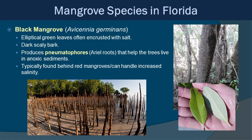Next up, we have the black mangrove. The black mangrove has more elliptical leaves that are often encrusted in salt. They have bark that's dark and scaly, hence the name. They produce what we call pneumatophores — little aerial roots, or snorkel roots — that help keep the tree healthy in these anoxic sediments by enabling gas exchange. When you see the pneumatophores in an area, also called dead men's fingers coming out of the shore, you know there's a black mangrove around. They are typically found behind red mangroves and can handle higher salinity. As tides come in and inundate them and then go back out, some of the saltwater left in the soil evaporates and the soil gets saltier and saltier, which is where they're able to handle that salt a little better.